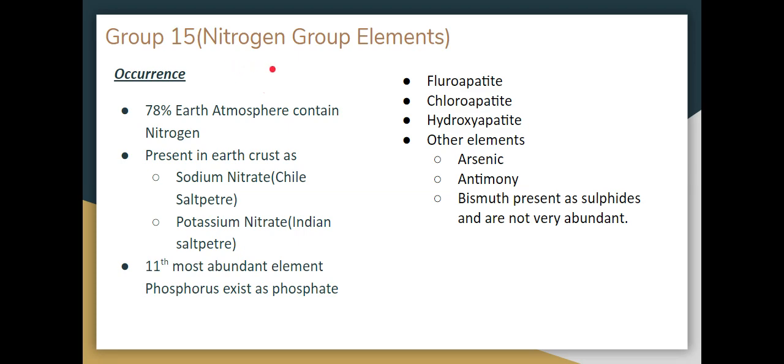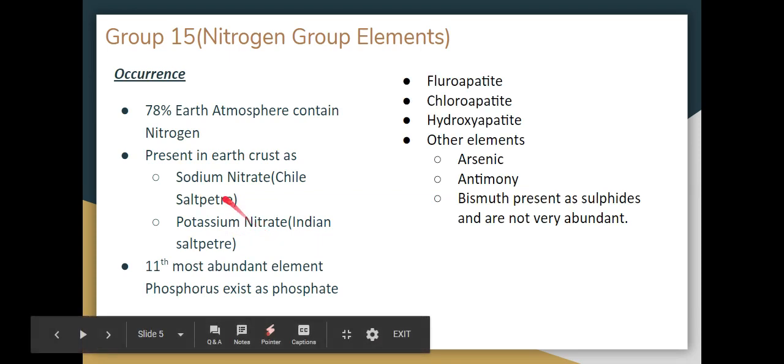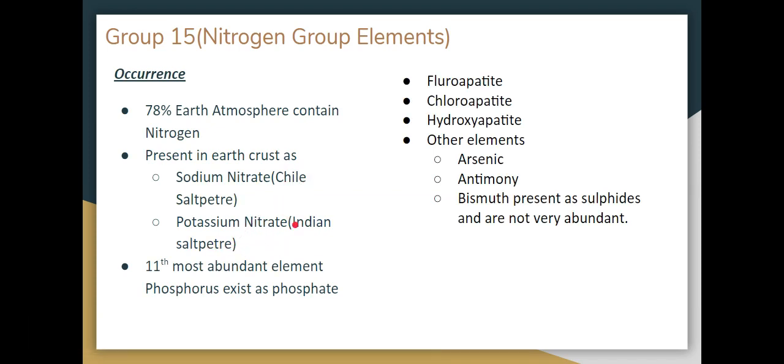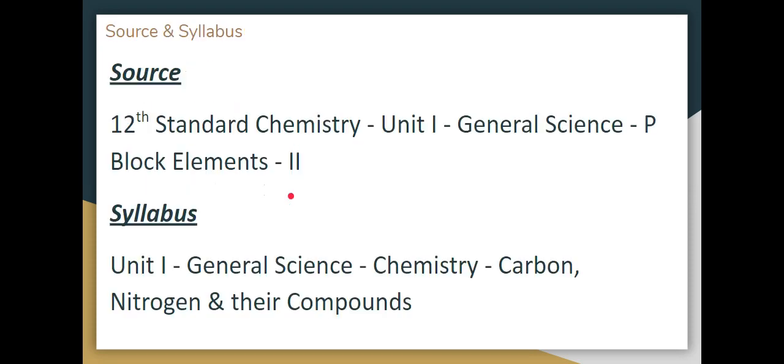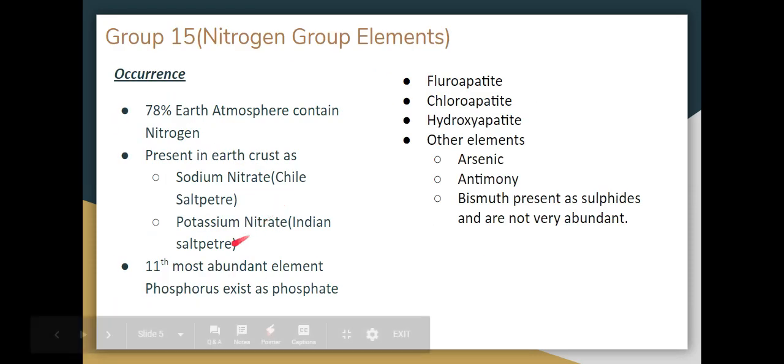Here we will talk about Group 15 Nitrogen Group Elements. Nitrogen occurrence: 78% of Earth's atmosphere contains Nitrogen. Present in Earth's crust as Sodium Nitrate (Chile Saltpeter) and Potassium Nitrate (Indian Saltpeter). The 11th most abundant element, Phosphorus exists as phosphate. So the Indian Salt Peter is Potassium Nitrate. Option C is the question's answer.